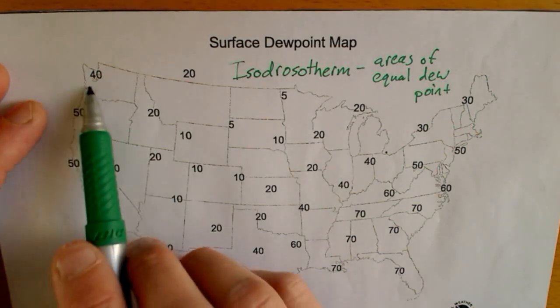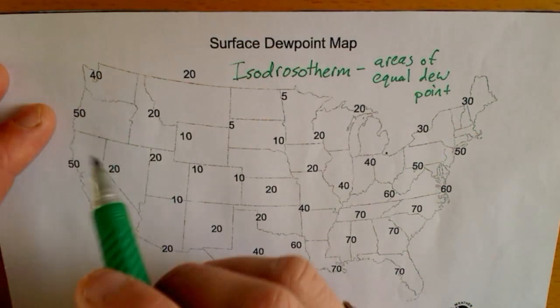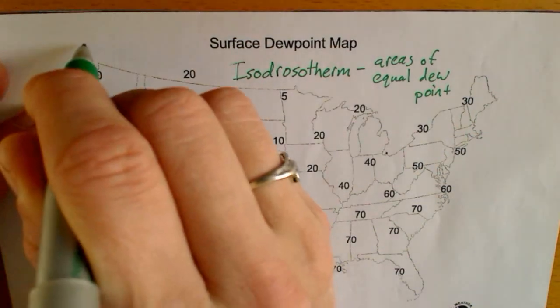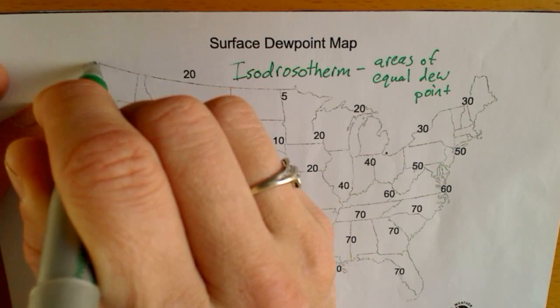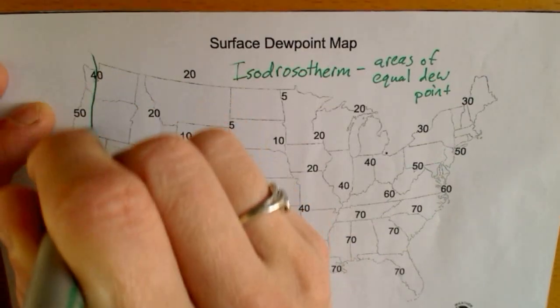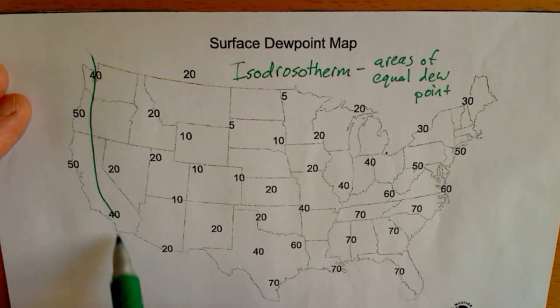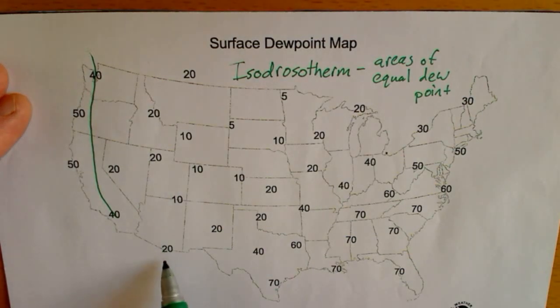Once again, Seattle — the dew point is about the same as the air temperature, very interesting. So I'm going to draw that 40, and that 40 is going to go all the way down to Los Angeles. And from there, those are 20s.